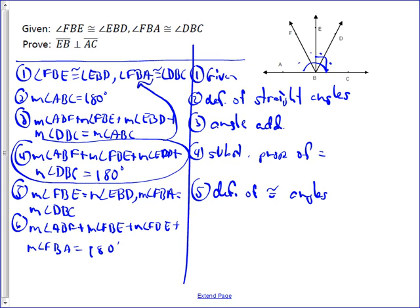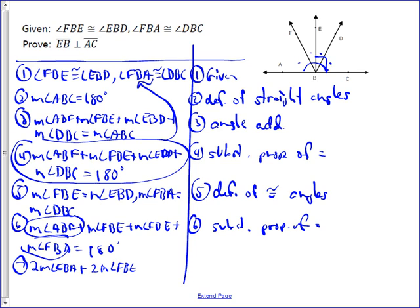And our reason for that is just substitution, property of equality. Then, you can simplify this. I call this a substitution step because instead of one measure of angle FBA and another measure of angle FBA, we put them together to get two measure of angle FBA plus two measure of angle FBE equals 180. And so, that's going to give you measure of angle FBA plus measure of angle FBE equals 90.